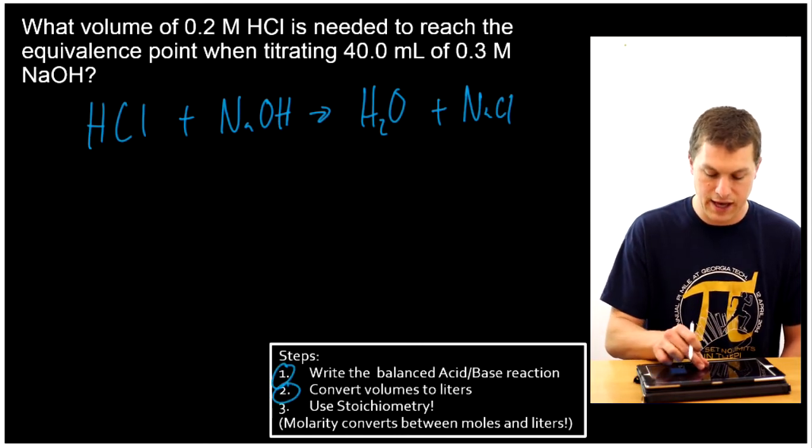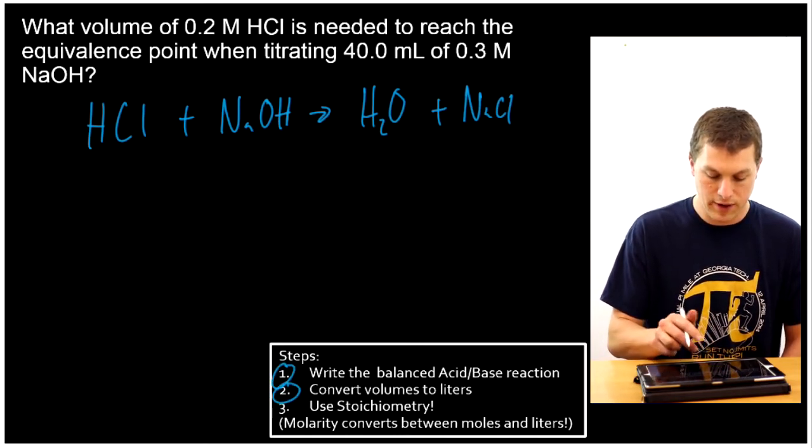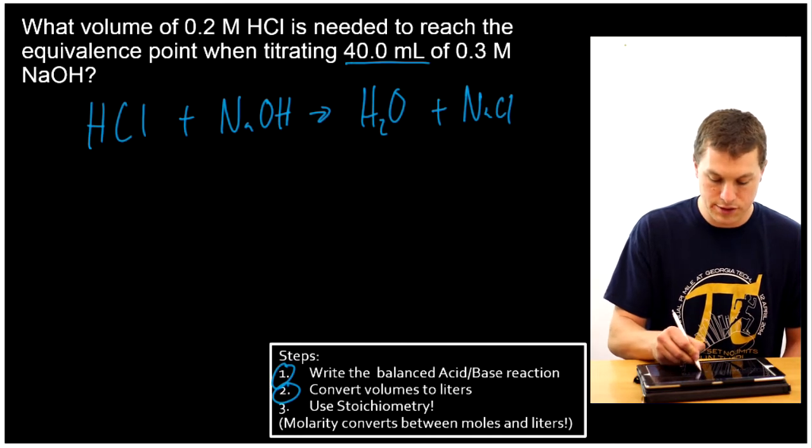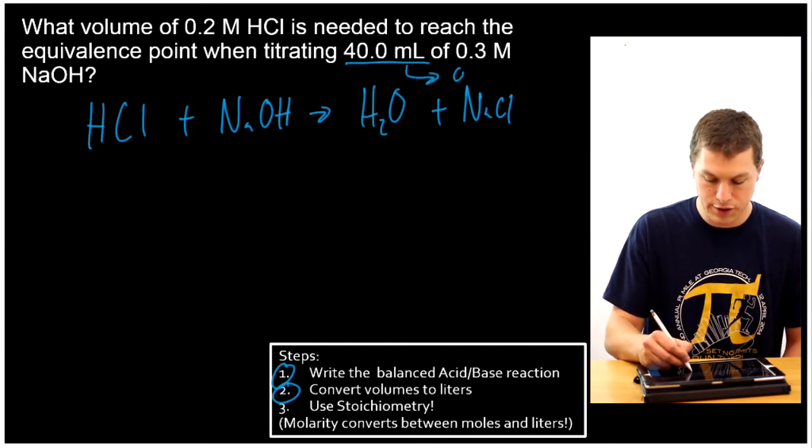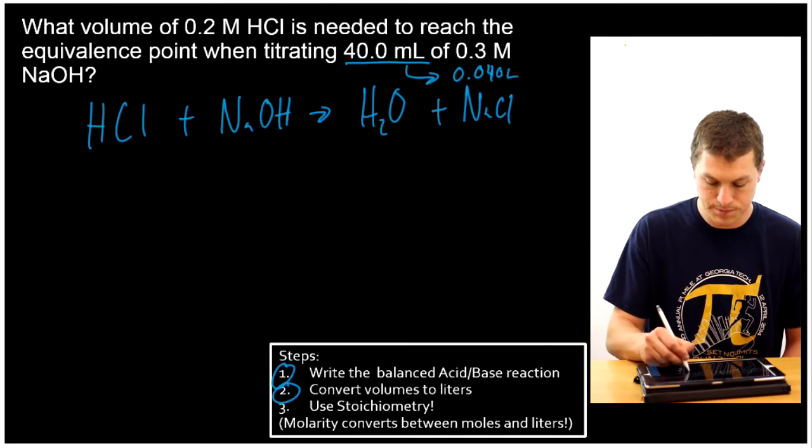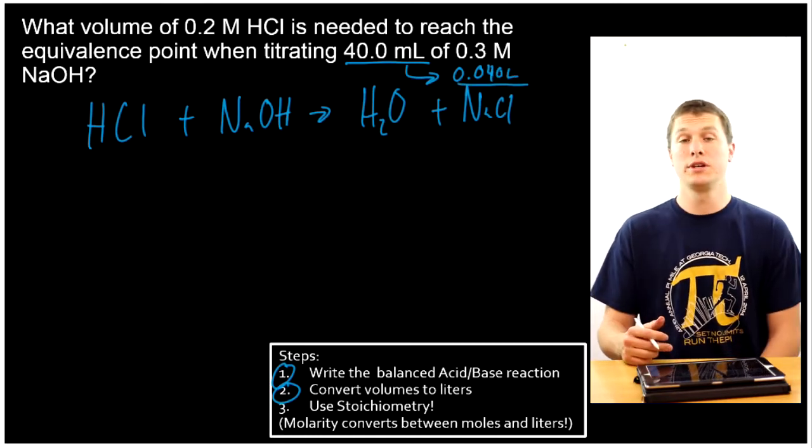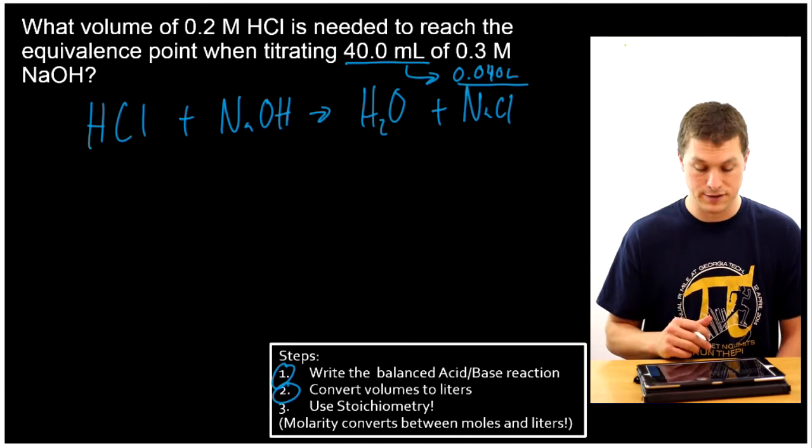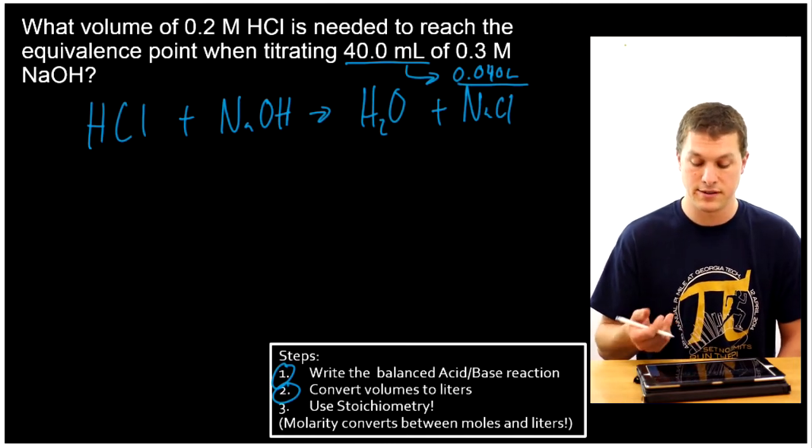Then I'm going to convert any volumes I have to liters. And right here, you'll notice I have 40 milliliters. So I need to convert that to 0.040 liters. And all I need to do to convert between milliliters and liters is divide by 1,000. So I've divided 40 milliliters by 1,000 and I get my liters.